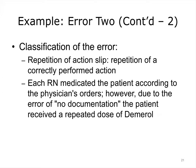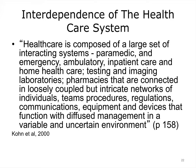From a system-centered point of view, the authors of To Err as Human capture the interdependence of the healthcare system: healthcare is composed of a large set of interacting systems — paramedic, ambulatory, inpatient, and home healthcare, testing and imaging laboratories, pharmacies — connected in loosely coupled but intricate networks of individuals, teams, procedures, regulations, communications, equipment, and devices that function with diffused management in a variable and uncertain environment. Nuclear power plants and airplane cockpits are tightly coupled systems where things normally proceed in an orderly fashion; the practice of medicine is more complex and varied with less certain outcomes.